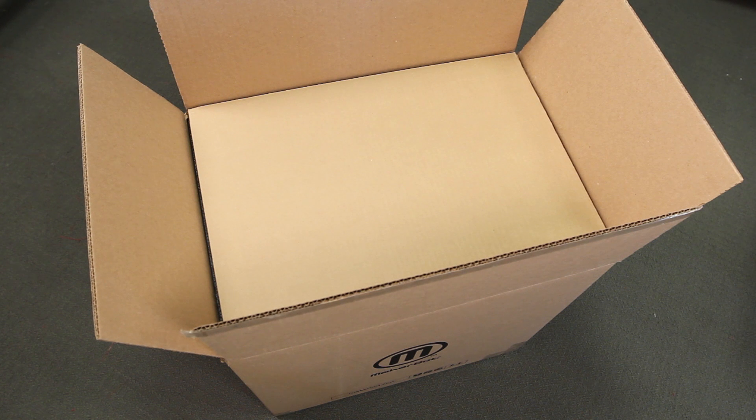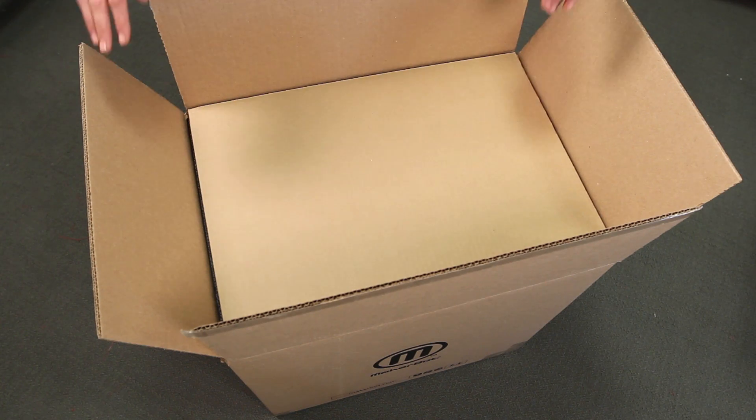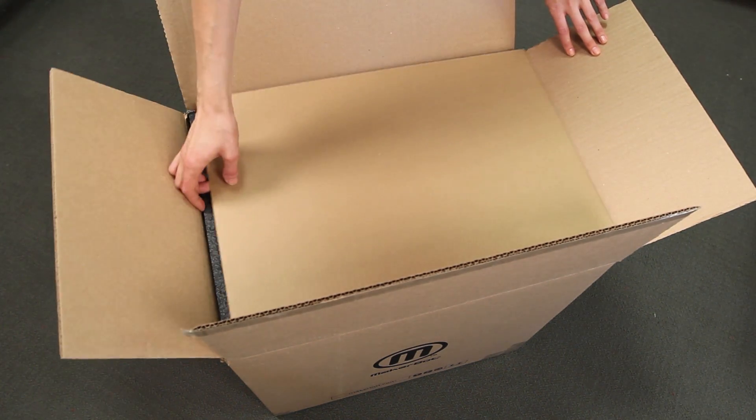As you unpack your MakerBot Replicator 2X, be sure that you do so with care and attention and that you don't force anything out of place. It's a good idea to begin with your MakerBot Replicator 2X box on the ground. Open it up and remove this cardboard piece on top.